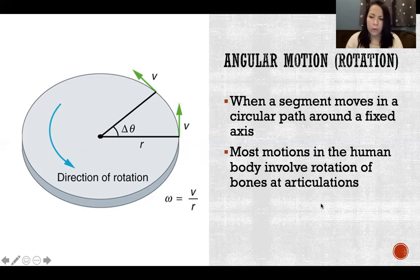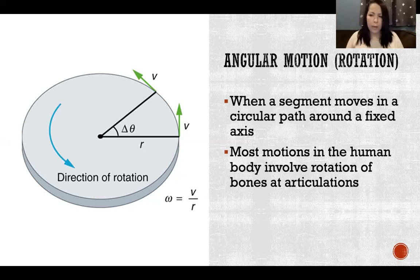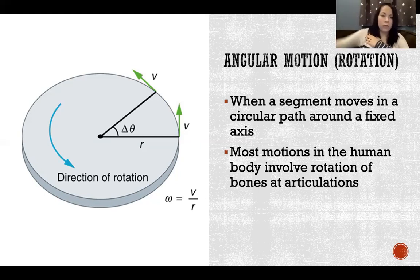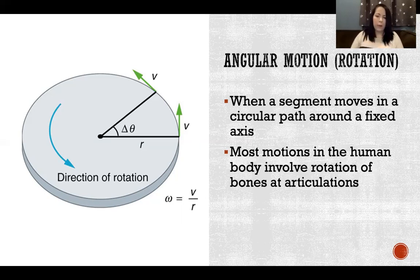Most motions in the human body involve rotation of bones at articulations. So even though we call this flexion and extension and abduction and adduction, what's still occurring from a biomechanical perspective is rotation of the humerus around the glenoid fossa. We don't refer to that as rotation when naming joint actions — we name them flexion, extension, and so on — but in terms of angular motion that's rotation happening at that joint.